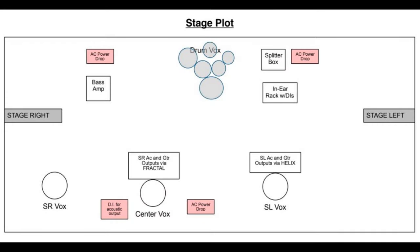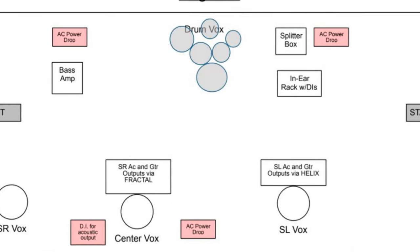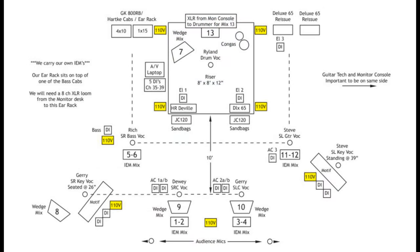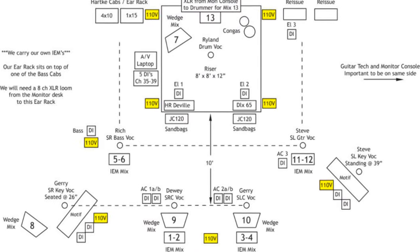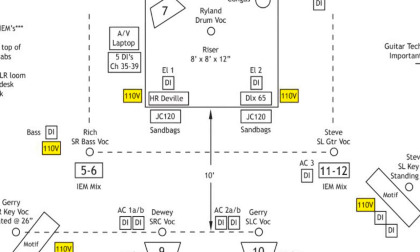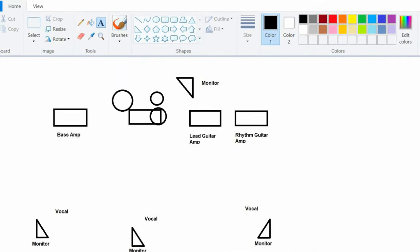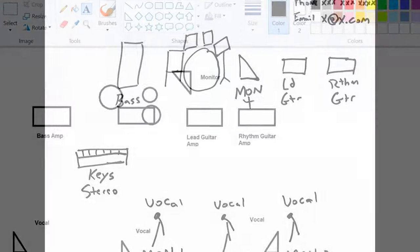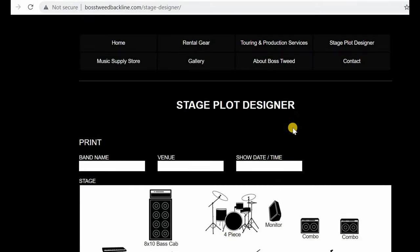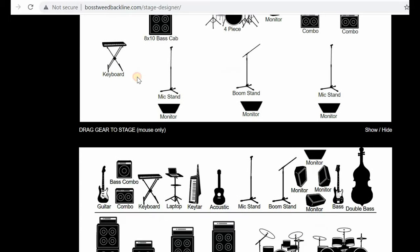This all brings us to the stage plot. The stage plot is a graphical representation of the position of the band and their instruments on stage. This tells the PA provider where to lay out the lines and monitors on stage for the band. It doesn't have to be a great work of art — even Microsoft Paint can be used. You can even draw it by hand and scan it to your computer. These days there are even online stage plot generators; I'll leave a link below for that.